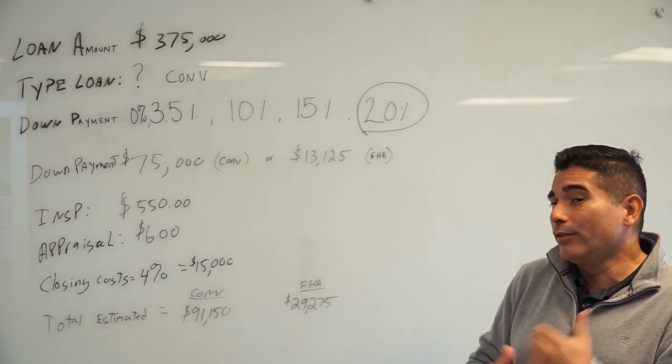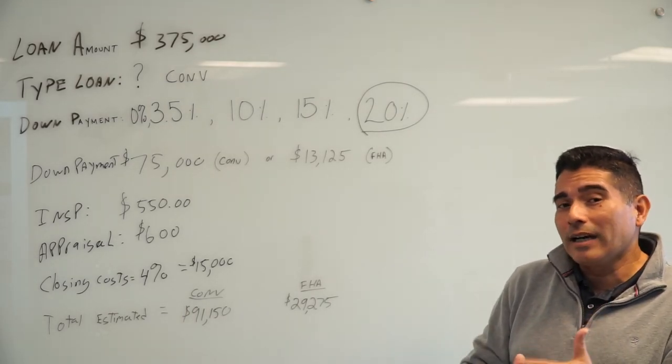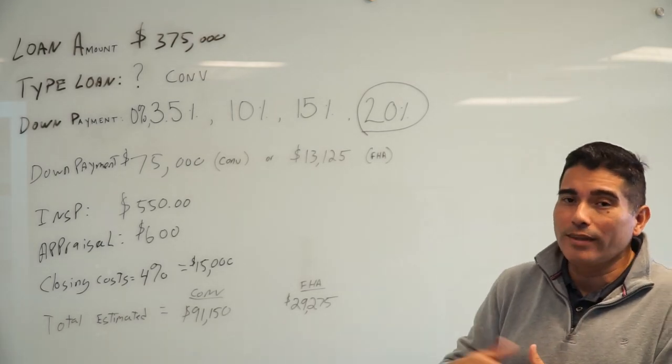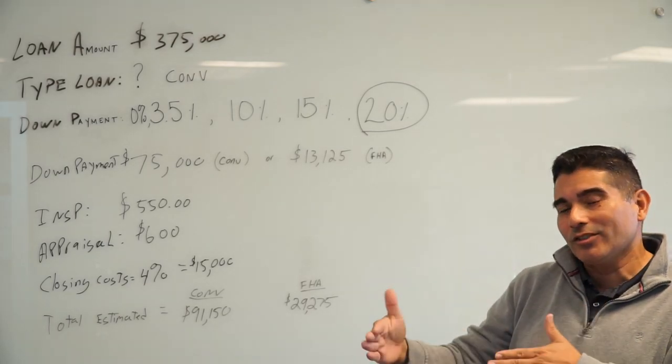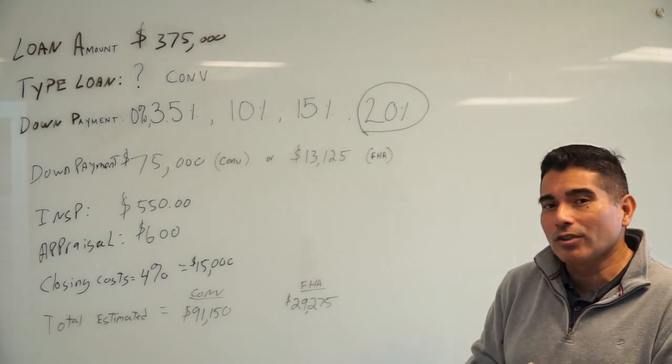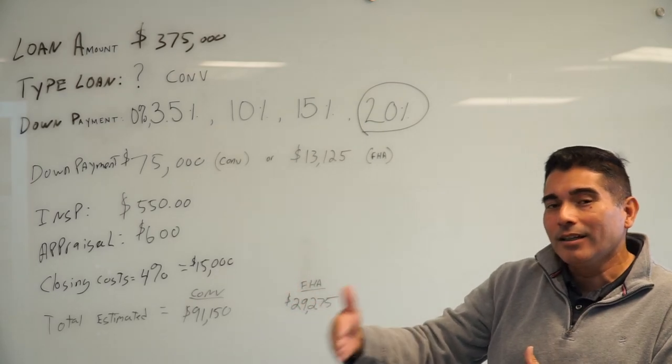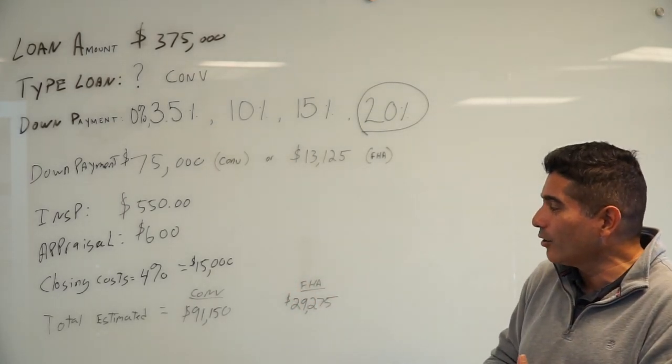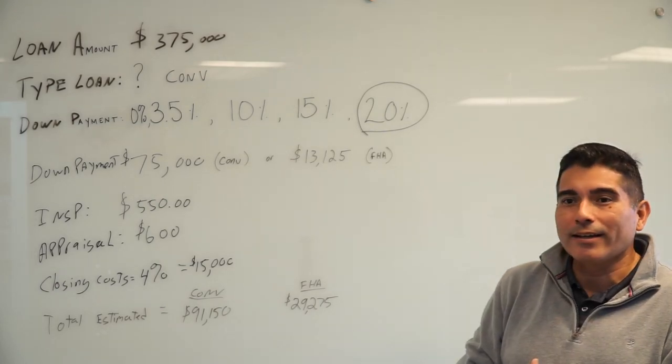If you're renting right now, a good time to start working on this is at least six months before the end of your lease. That'll give you maybe just enough time to make a couple of adjustments so that you'll be in a better position. By the time your rent's about to end, you have about a month or so to look for a home, get another contract, and close on it. Hopefully that helped.